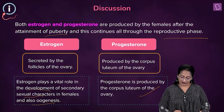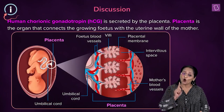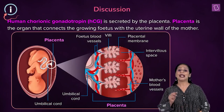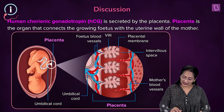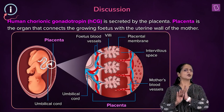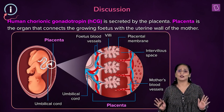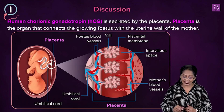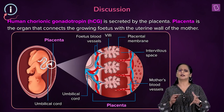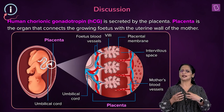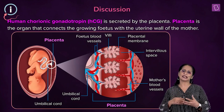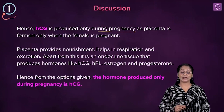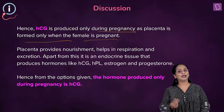The hormone produced only during pregnancy is human chorionic gonadotropin, HCG. This is secreted by the placenta. A placenta is formed only when there is pregnancy — otherwise it cannot form. The placenta is an organ that connects the growing fetus with the uterine wall of the mother — it is a communication system between the developing fetus and the mother. So HCG is produced only during pregnancy as the placenta is formed only when the woman is pregnant.